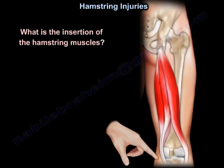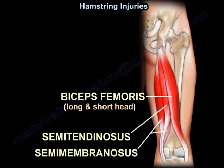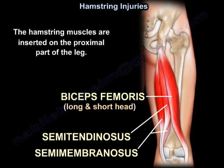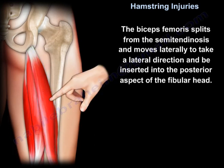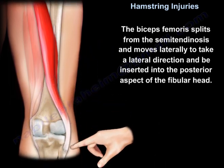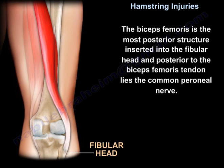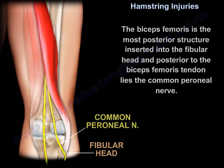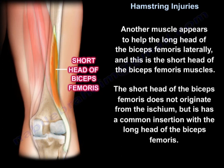What is the insertion of the hamstring muscles? The hamstring muscles are inserted on the proximal part of the leg. The biceps splits from the semitendinosus, moves laterally, and is inserted into the posterior aspect of the fibular head. It is the most posterior structure, and posterior to the tendon of the biceps lies the common peroneal nerve. The short head of the biceps does not originate from the ischium but shares a common insertion with the long head of the biceps.